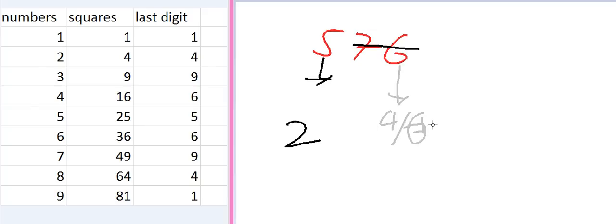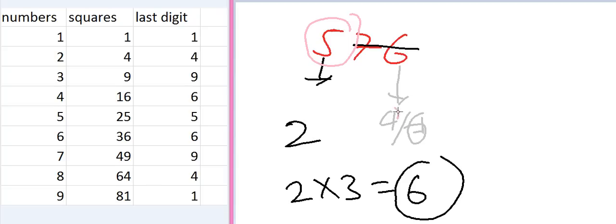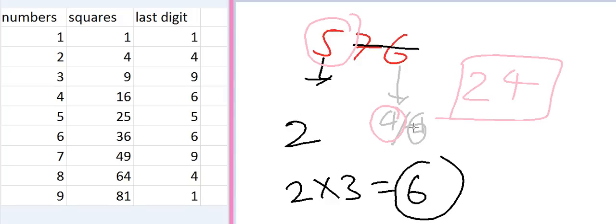The second digit is 2 and the first digit is either 4 or 6. To determine the first digit, multiply 2 by the number just after it, which is 3: 2 times 3 equals 6. If the remaining number (5) is less than this product (6), then the smaller candidate is the answer. Since 5 is less than 6, our answer is 4, giving us a square root of 24.